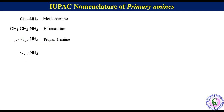For isopropylamine, the general IUPAC name is alkane-X-amine. Numbering will be 1, 2, and 3. Here we can see that the number of carbons is 3 and the value of X is equal to 2, so the IUPAC name of this compound will be propane-2-amine.